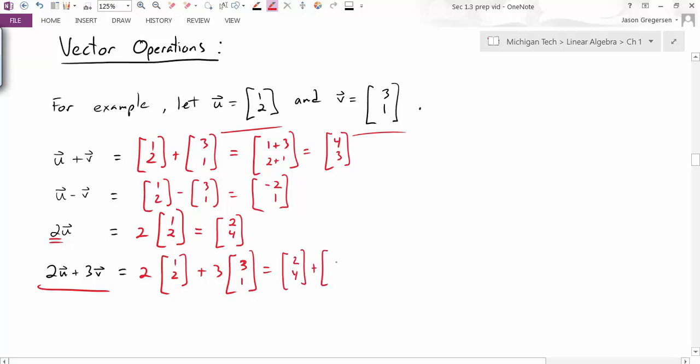I'll do the multiplication first to get the vector 2, 4, plus the vector 9, 3. And then I'll add them to get the vector 11, 7. So now I can do all those vector operations.